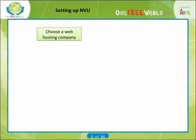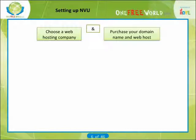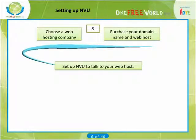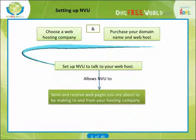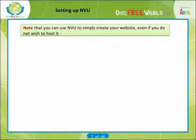The next thing to do is to choose a web hosting company and go through the process of purchasing your domain name and web host. After that, you will need to set up NVU to talk to your web host. This will allow NVU to send and receive the web pages you're going to be making to and from your web hosting company. It's actually a rather simple process. Note that you can use NVU to simply create your website even if you do not wish to host it.